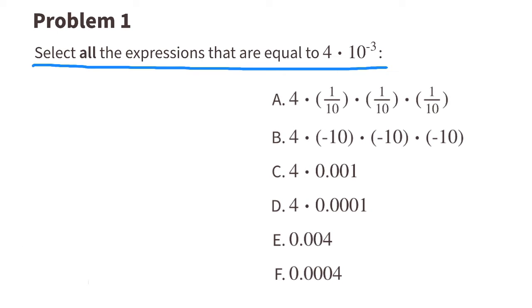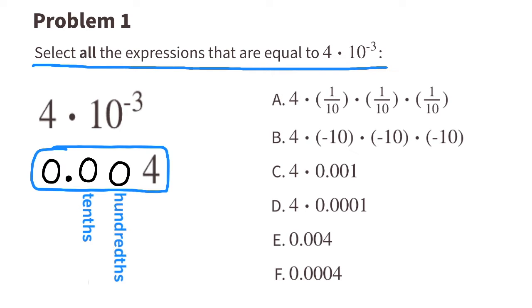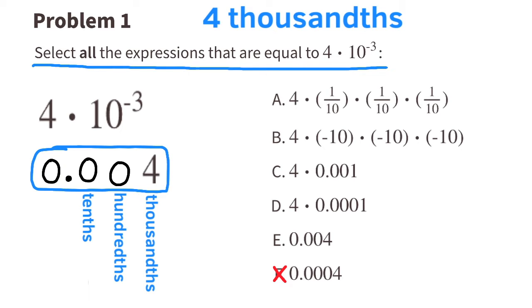Problem number one: select all the expressions that are equal to 4 times 10 to the power of negative 3. To write this as a decimal, start with a 4 and move the decimal to the left three places. The decimal value is 4 thousandths, which means it's not equal to F, which is 4 ten-thousandths.